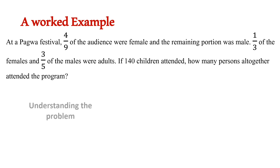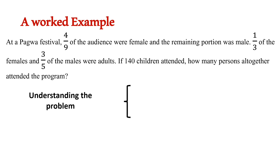The first stage is to understand the problem. This is done by asking yourself: what is being asked? In this case, we are asked to find the total number of persons attending the Pagwa Festival. Then you ask yourself: what is known? In this case, we know the fraction representing the female attendees, the fraction representing the male attendees that were adults, and the number of children attendees.